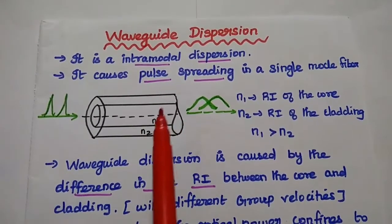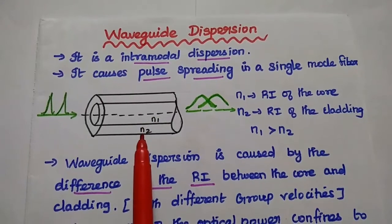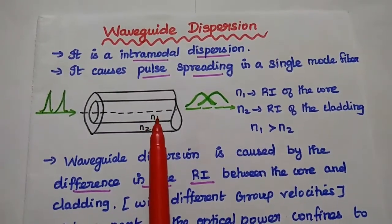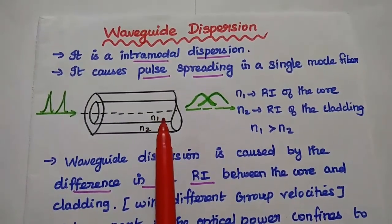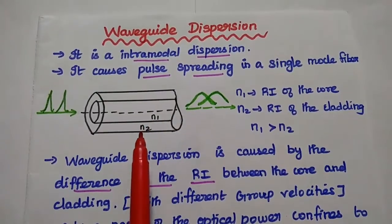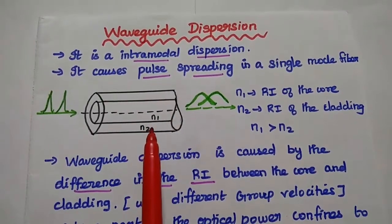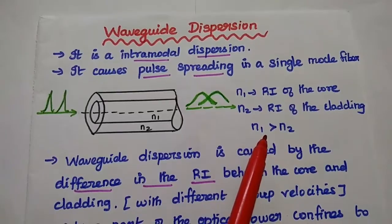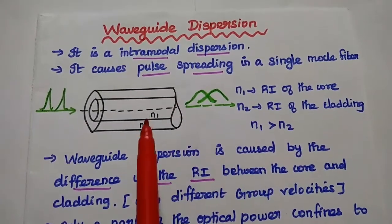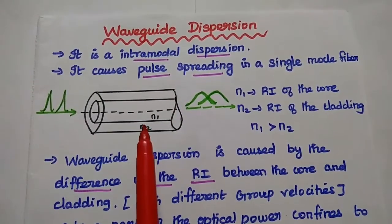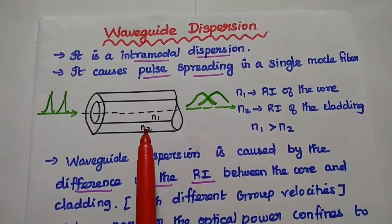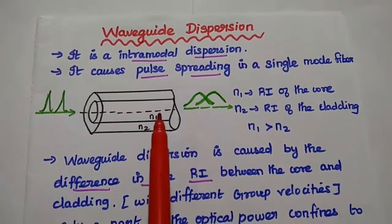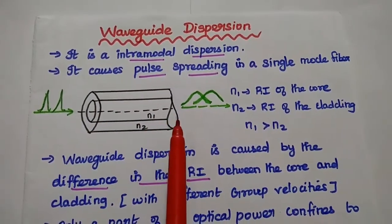This is due to the variation in the refractive index between core and cladding. Here N1 is the refractive index of the core, N2 is the refractive index of the cladding. N1 is always greater than N2. Due to the refractive index variation between these two, we can get the pulse spreading effect.